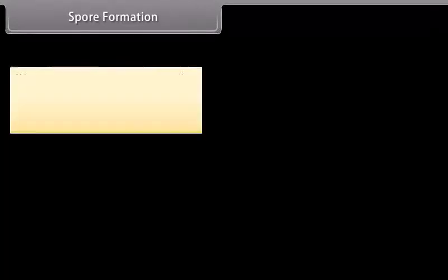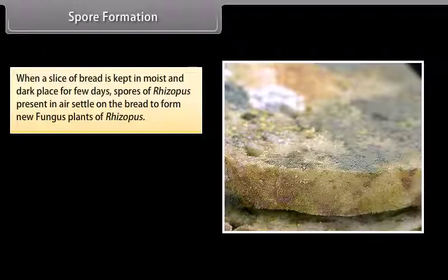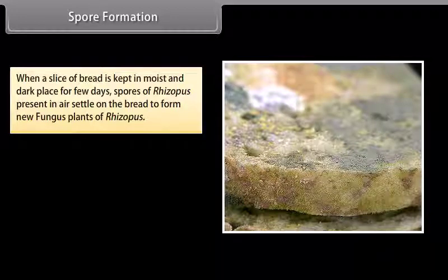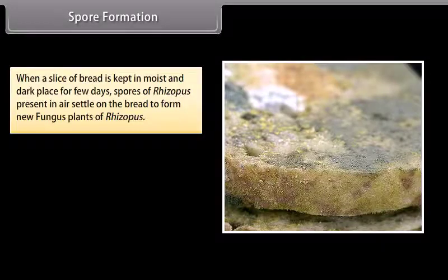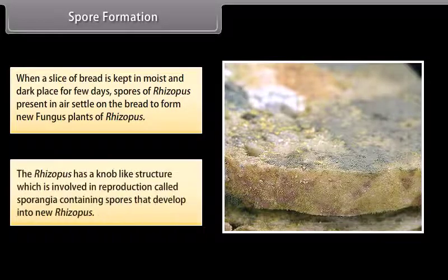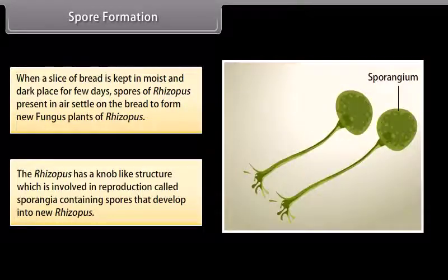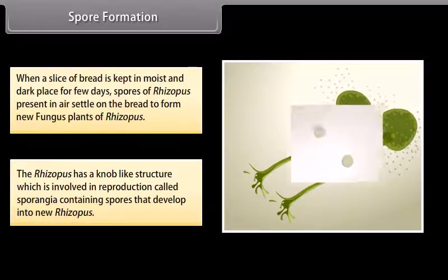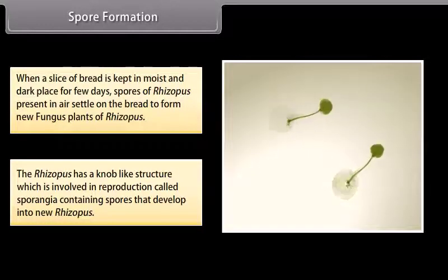Spore formation: When a slice of bread is kept in a moist and dark place for a few days, spores of Rhizopus present in the air settle on the bread to form new fungus plants of Rhizopus. Rhizopus has a knob-like structure called sporangia, which is involved in reproduction and contains spores that develop into new Rhizopus plants.